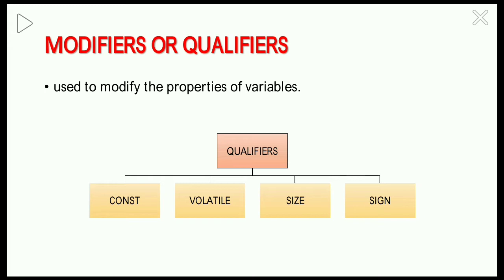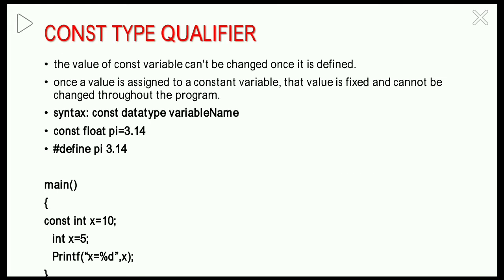We have four types of modifiers or qualifiers: constant, volatile, size, and sign qualifier. First, coming to the constant qualifier — the constant type qualifier.